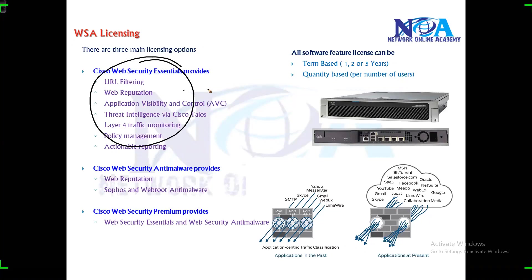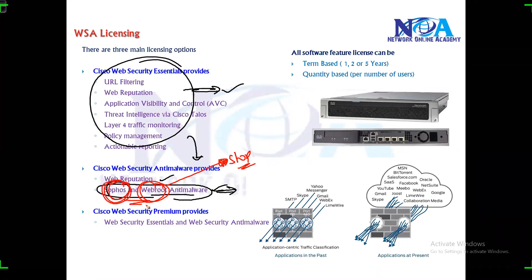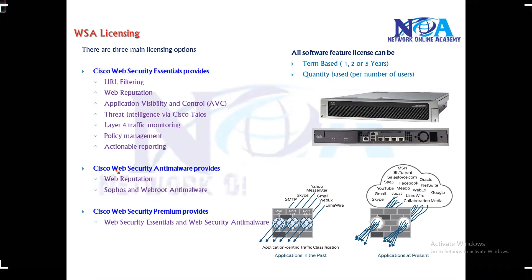There are additional options such as web reputation, and Sophos and Webroot anti-malware for anti-malware protection. Sophos and Webroot are vendors that provide protection against malware, spyware, and antivirus threats. They block malicious code, malicious applications, and unwanted web content. Cisco integrates with their databases to provide anti-malware protection for your web traffic.